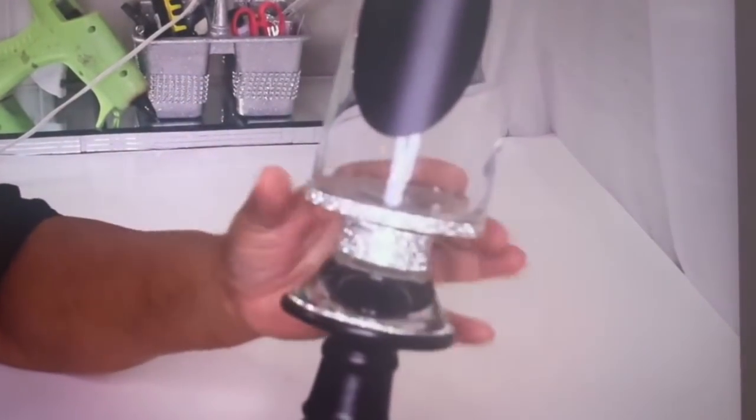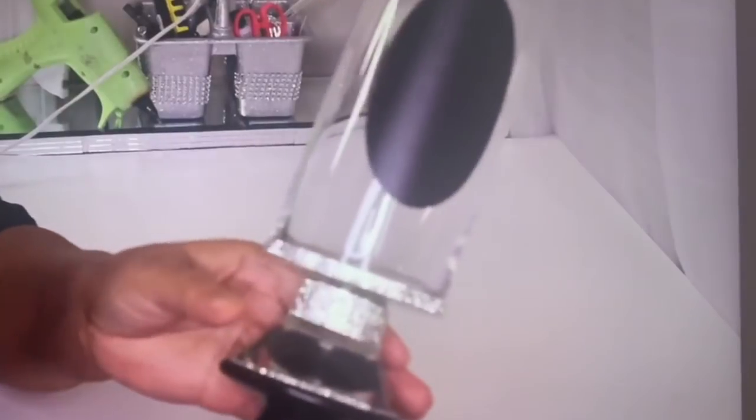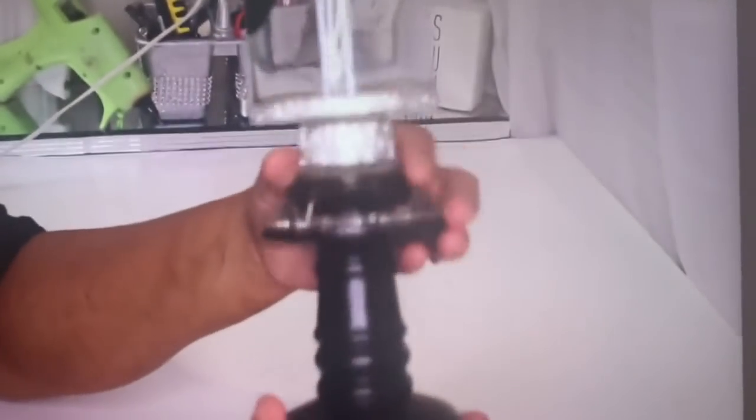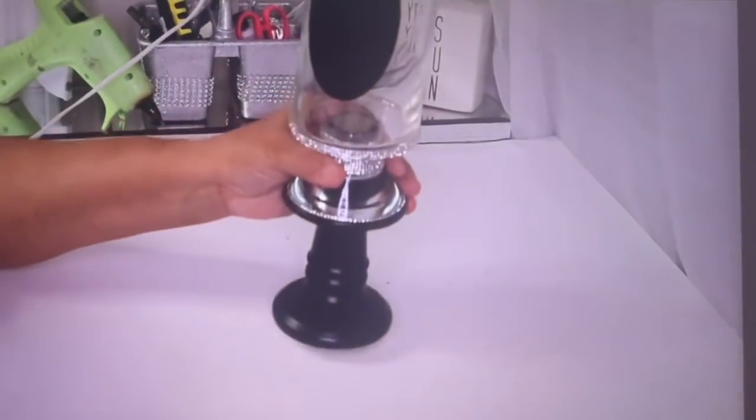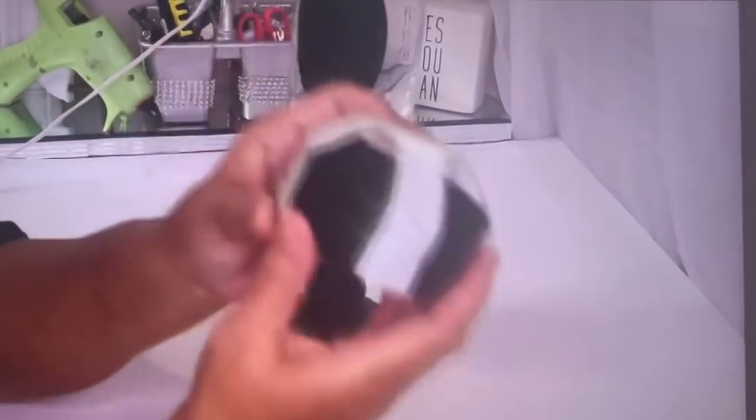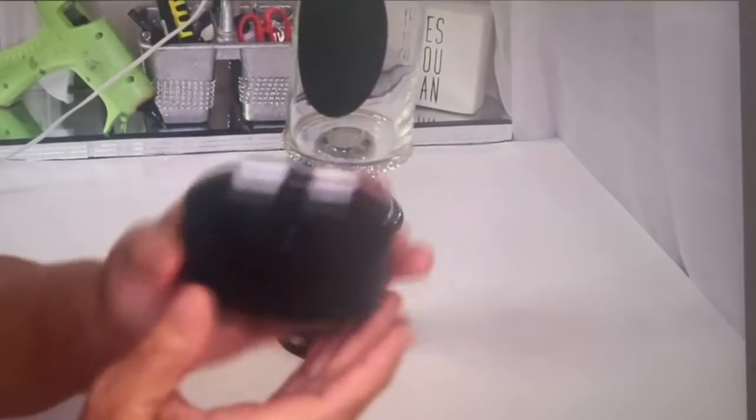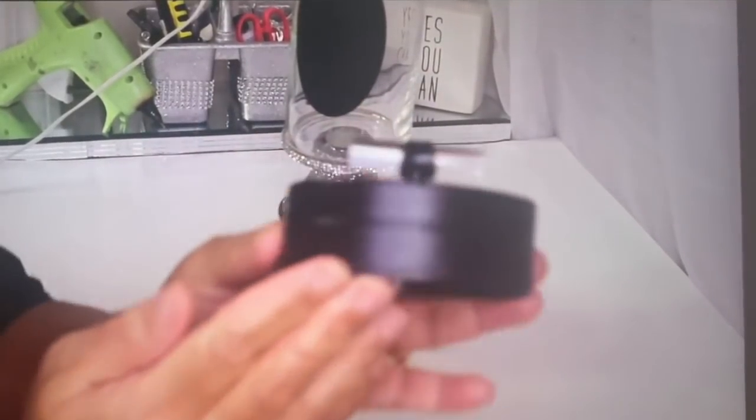Okay, off camera I went ahead and added three rows of bling right at the bottom of the glass. And as you can see, that really evens it out. I really love it this way. I forgot to remove the tape from the other lid, so I'll go ahead and do that now. I think the knob really accentuates the cap really well.